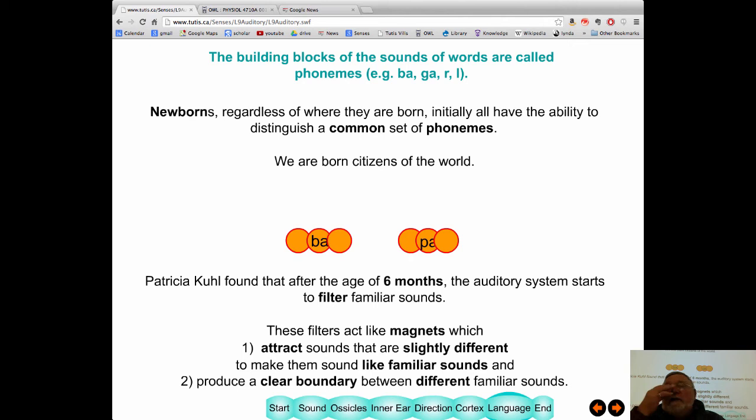Now, going back to phonemes. The remarkable thing is, if you're a newborn, you can hear every phoneme that exists. Okay? So, all over the world, anywhere, everyone, every child that's born, hears the same set of phonemes. Now, this lady called Patricia Kuhl, she found that at the age of six months, the auditory system starts filtering.